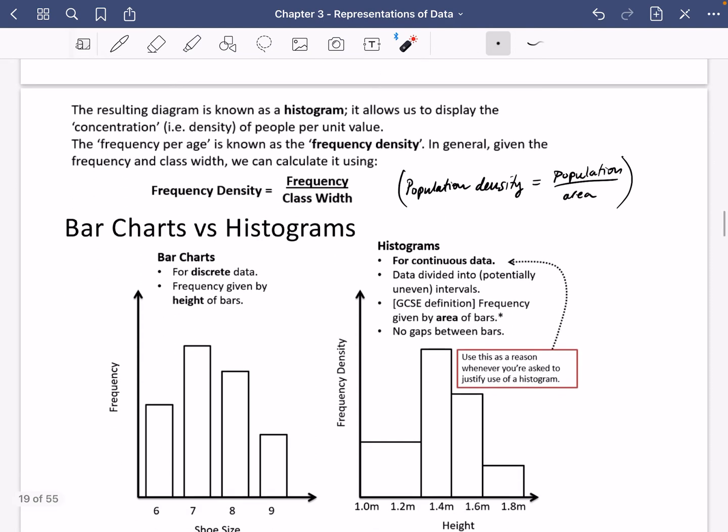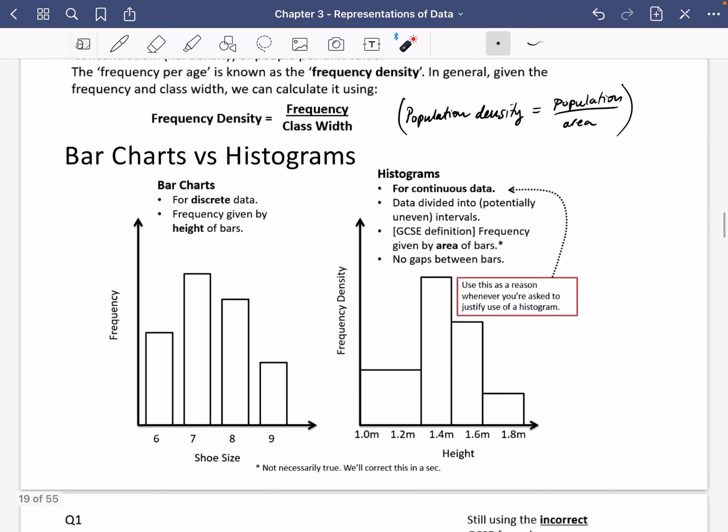So just to finish off the GCSE kind of version of this bit, we're going to do a couple of other bits. So first of all, what's the difference between bar charts and histograms? Well, we won't be doing anything to do with bar charts in A-level. That is a more sort of foundation GCSE. So bar charts are usually for discrete data. So here you'll see like shoe size, we've got 6, 7, 8, 9. And the frequency is given by the height of the bars, pretty straightforward.